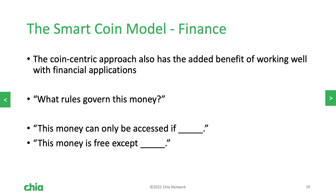Another example of the strengths of this coin model is financial uses. Because we're thinking in terms of what rules govern this money, Chia is very strong for financial applications. You can write coins very simply that say: this money can only be accessed if..., or this money is free to be spent except for... Thinking about money in this way and writing programs in this way is very natural to how you design with Chia and Chialisp.